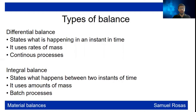The integral balance, used in batch processes, is what happens between two instants of time. You're going to input something, something is going to start to happen, and then the output is the exit. It uses amounts of mass instead of rates.